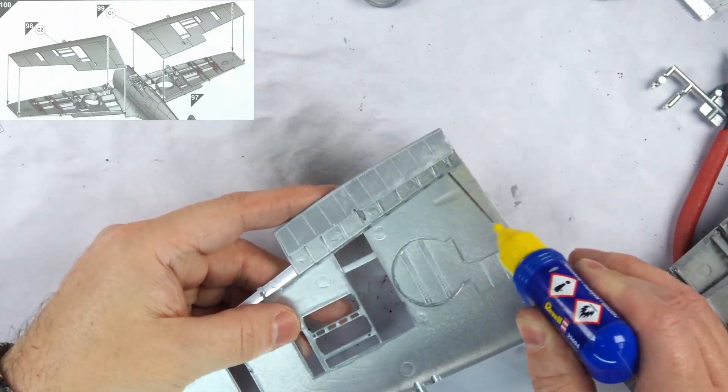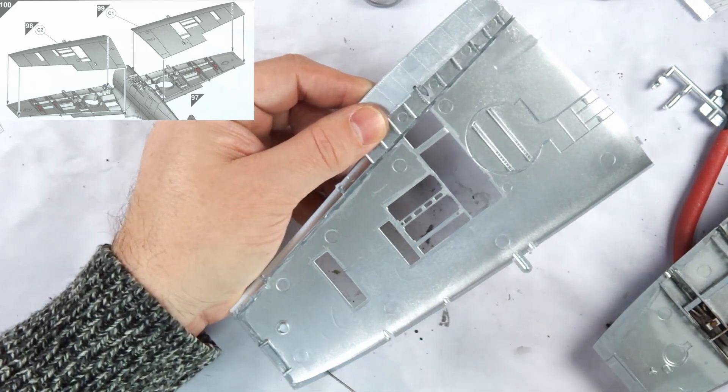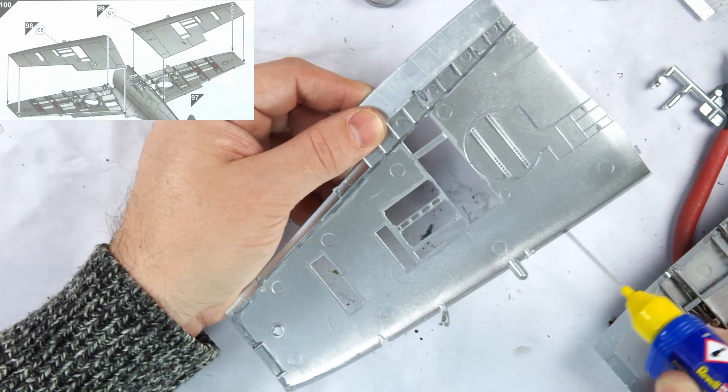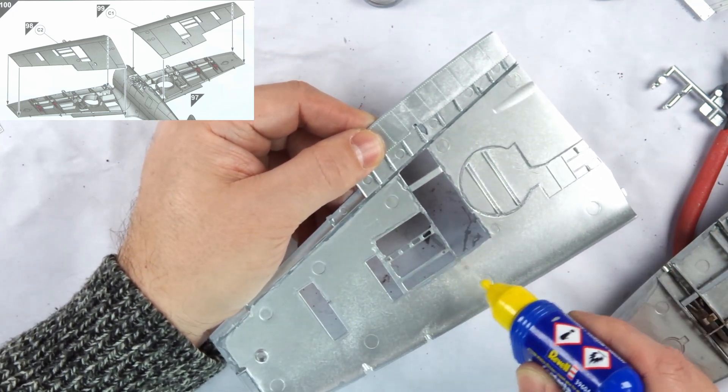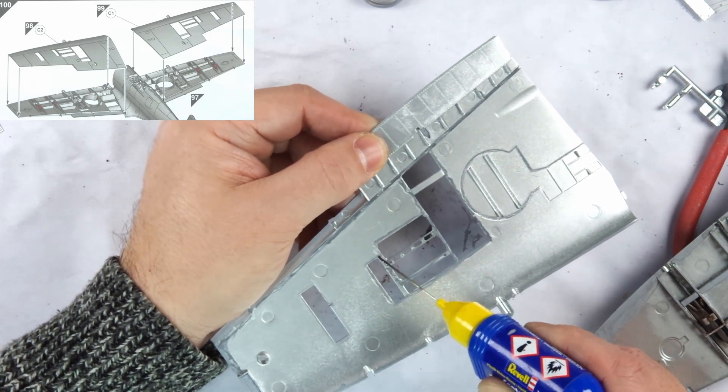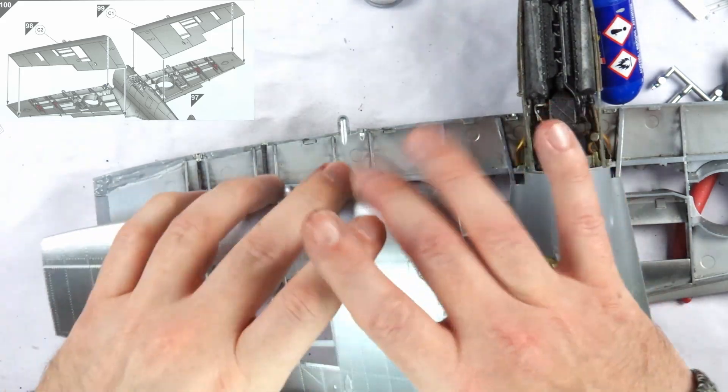With that done, it was back to the attachment of the upper wings. I used contact cement here on all the spars, cross supports, edges and other bay walls to ensure that this was very secure. Despite the engineering of the kit and the lack of what I'd normally call wiggle room here, I did find the fit of the wings a little problematic where they joined the fuselage.